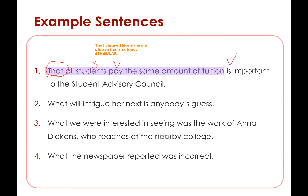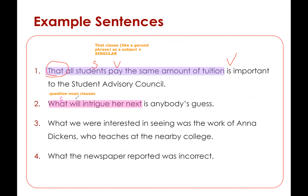If we take a look at the second example, this is actually not a that clause, but it is still a noun clause. So if you remember, in our overview lesson, we mentioned that clause, if or whether clause, and question noun clause. So for two, three, and four, these are question noun clauses because they start with a WH word, and sometimes how. What will intrigue her next is anybody's guess. So the whole noun clause is the subject — the verb will intrigue is within it — but the entire noun clause is the subject. And again, it is singular.